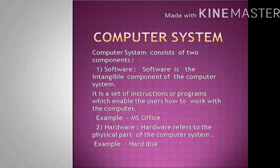The next slide is about computer system. A computer system consists of two components: software and hardware. Software is the intangible component of the computer system. It is a set of instructions or programs which enable the users how to work with the computer. For example, MS Office.